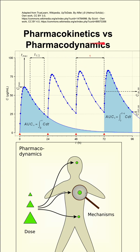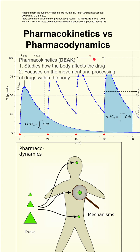This is the difference between pharmacokinetics and pharmacodynamics. Pharmacokinetics studies how the body affects the drug. It focuses on the movement and processing of drugs within the body.